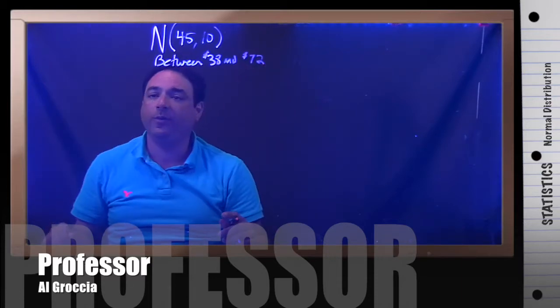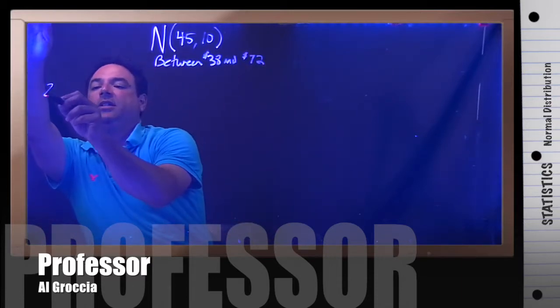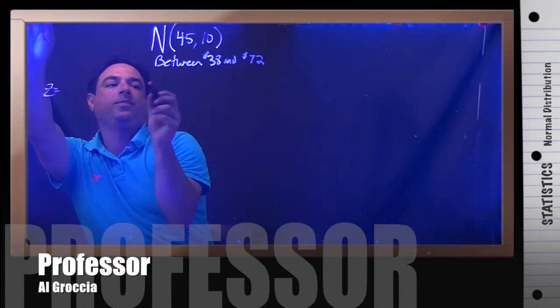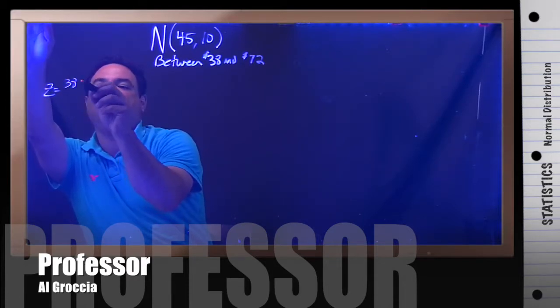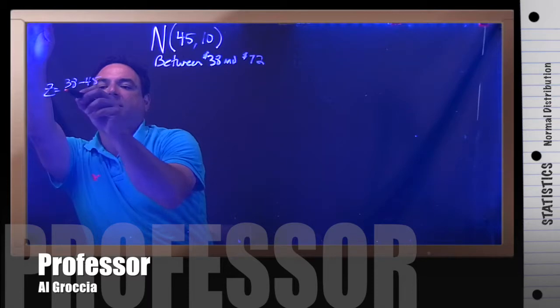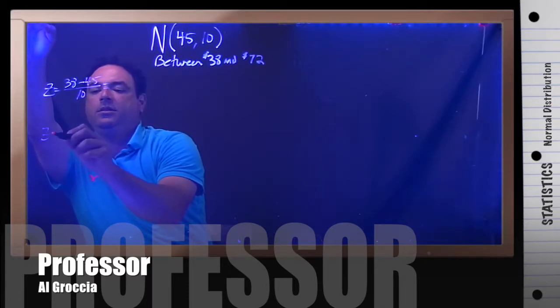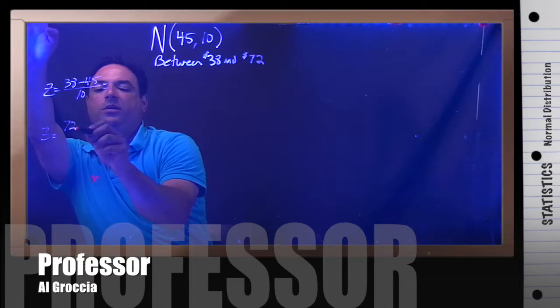So since we're looking for between, we need to find two z-scores. Remember to find your z-score: it is what you're looking for, minus the mean, divided by your standard deviation. The other one: what you're looking for, minus the mean, divided by your standard deviation.